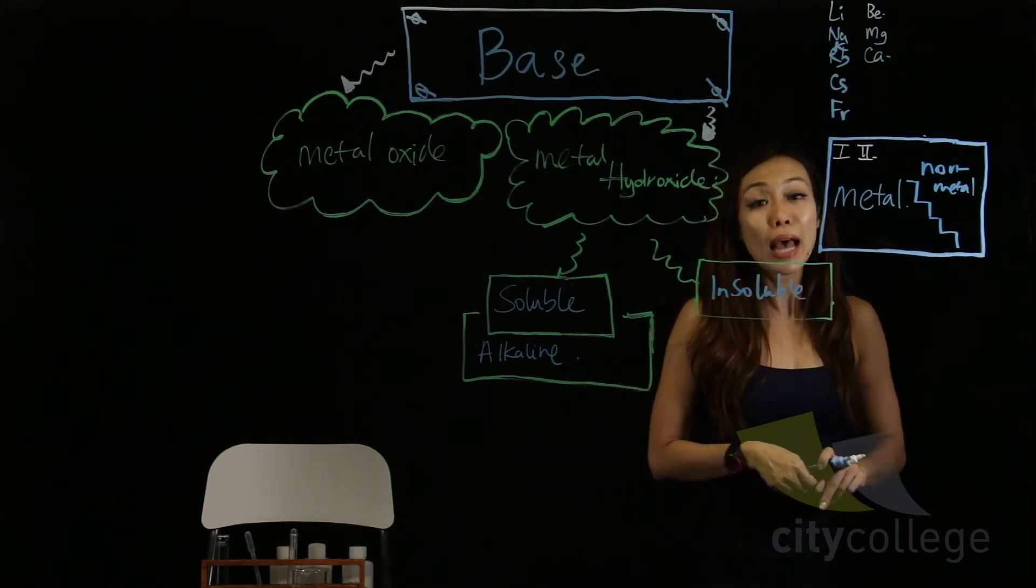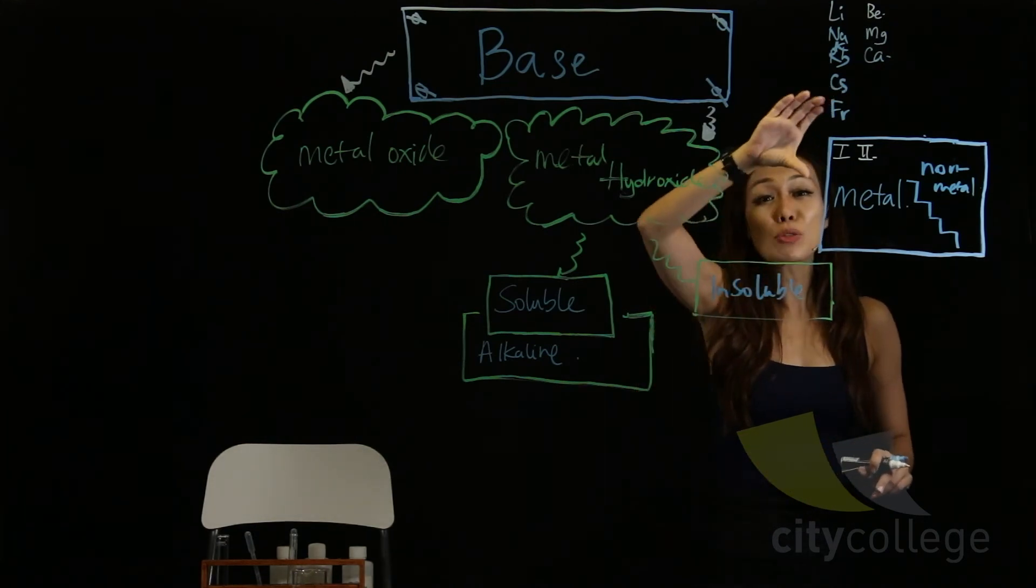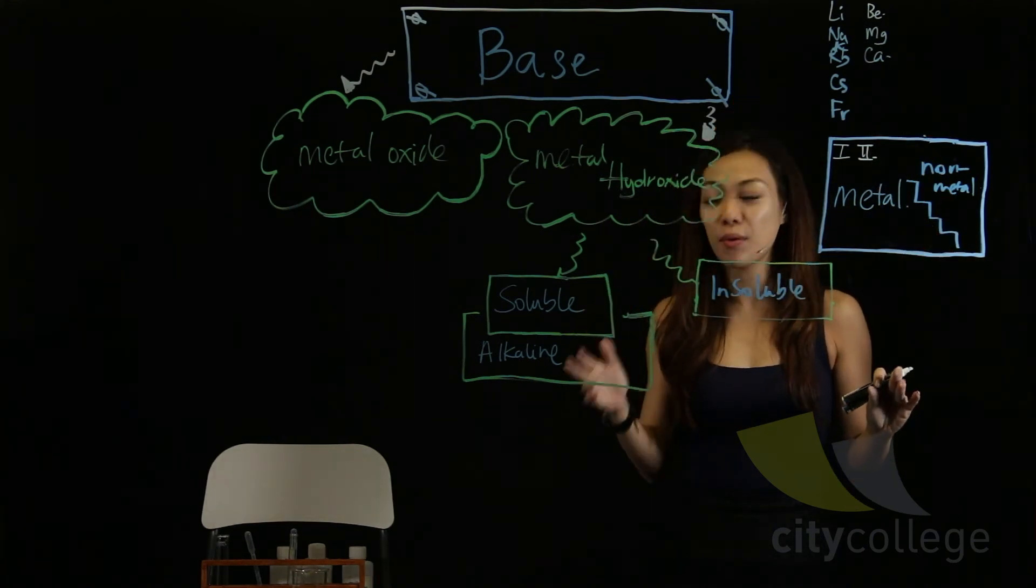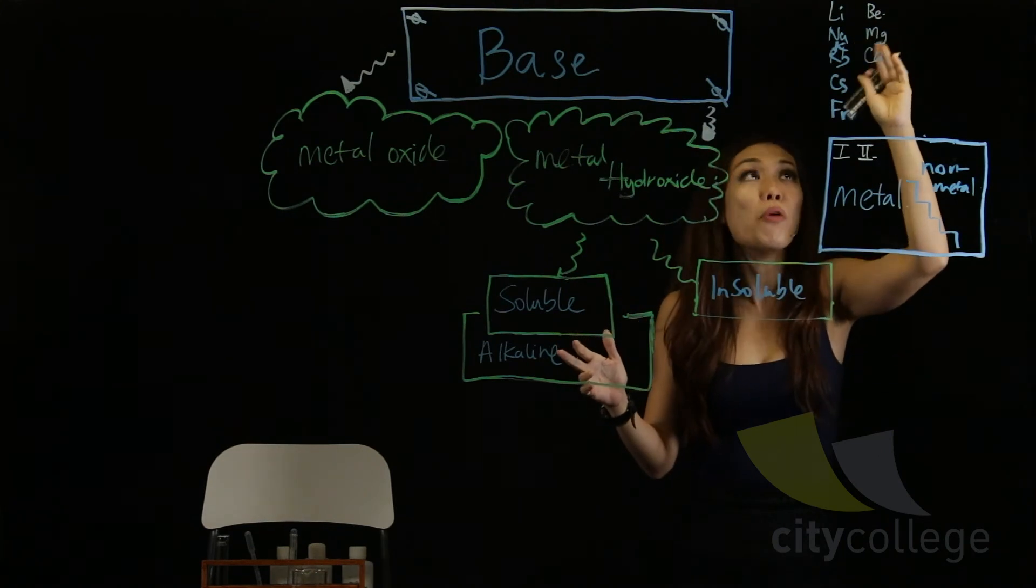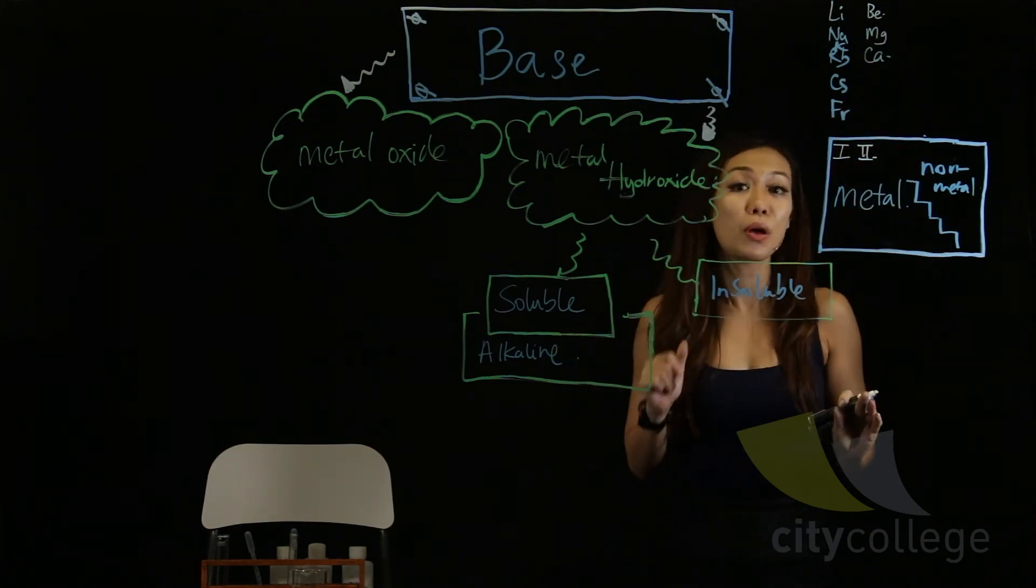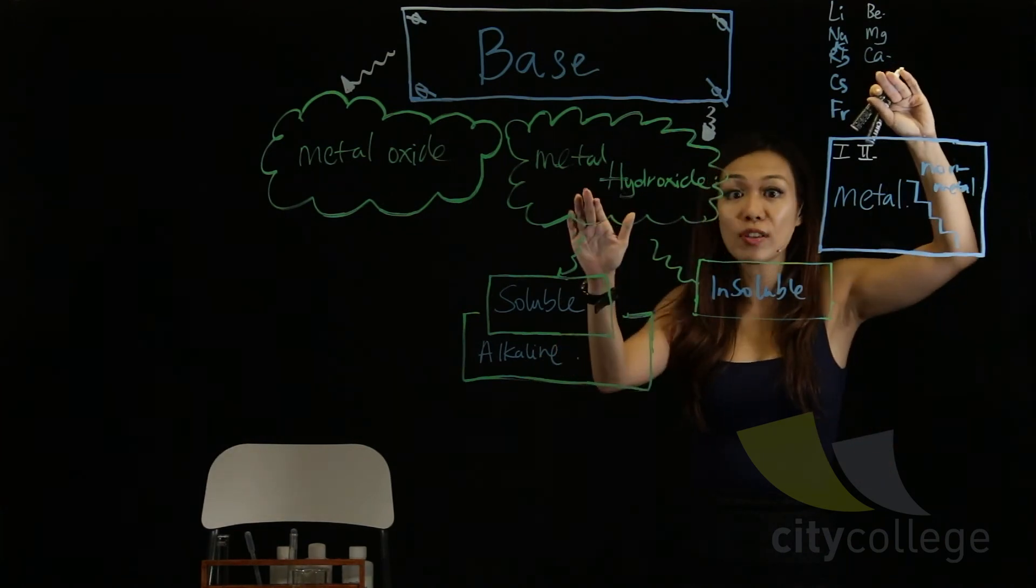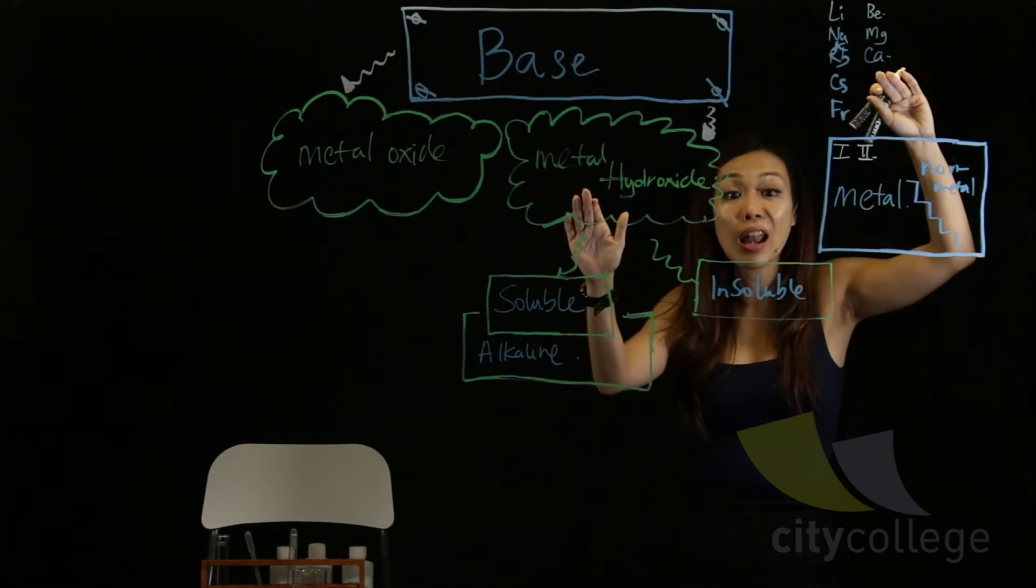Alkali earth metal. Sometimes, because of this word earth, and it's called alkaline, some people ask, so are they soluble as well? Well, out of this group, only one of them is very soluble, which is your calcium hydroxide. Calcium hydroxide. And it's none other than your lime water.